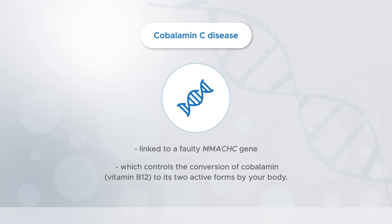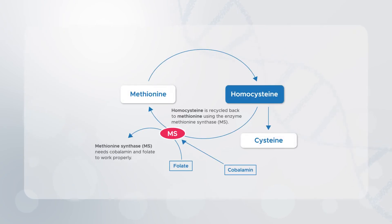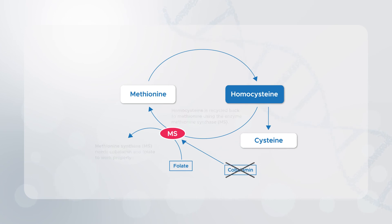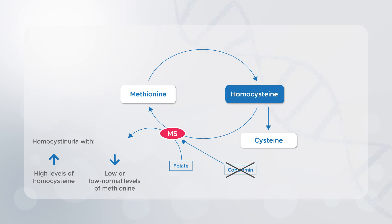These active forms of cobalamin act as cofactors for two different enzymes in two different processes. The first process is where homocysteine is recycled back to methionine using the enzyme methionine synthase, which needs the right form of cobalamin and folate to work properly. When there is a problem with cobalamin metabolism, it leads to high levels of homocysteine in blood and urine, and low to normal levels of methionine in the blood.